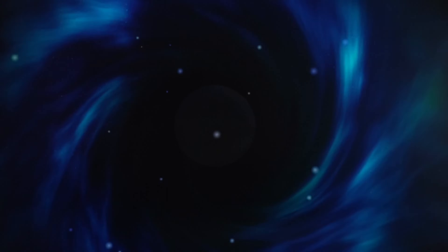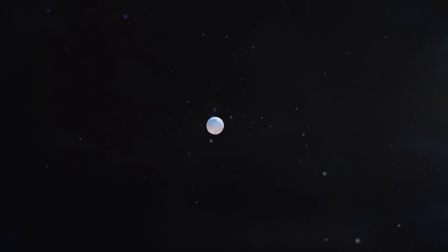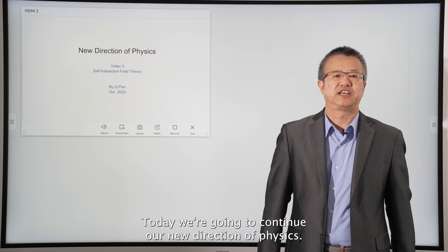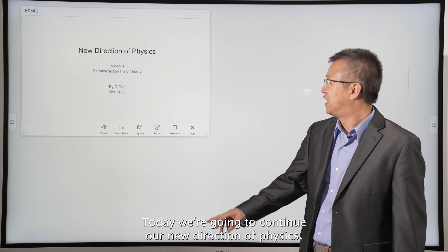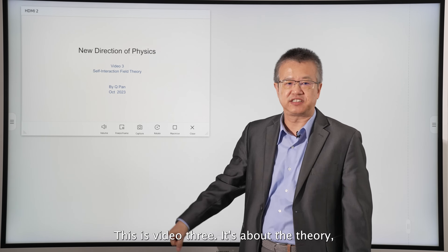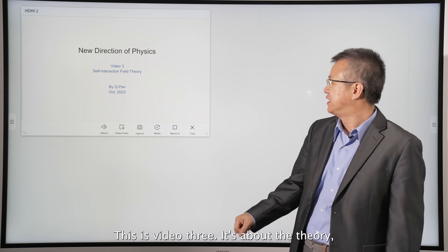There are so many dark clouds in modern physics. Let's go back to classic physics of the early 1900s and ask classic questions for elemental particles. Maybe it is time to revisit quantum mechanics and the theory of general relativity. This is our new direction of physics. Today we're going to continue our new direction of physics — this is video 3.